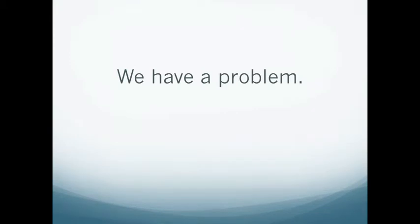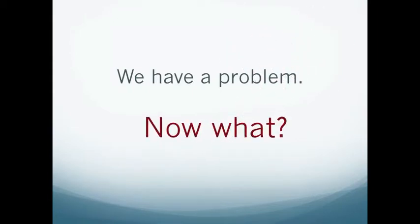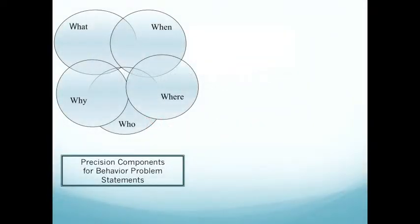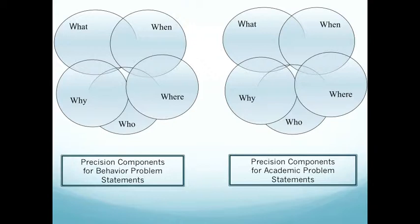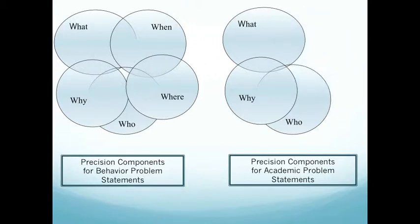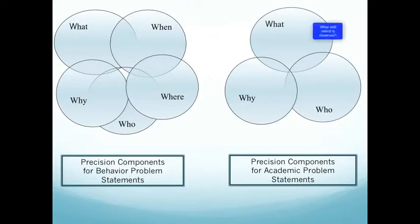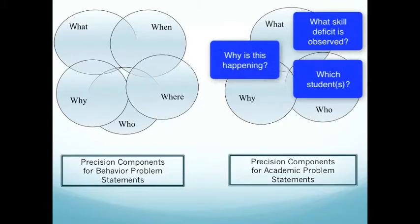Once we have defined that there is a discrepancy between what we expect and what we observe, our next question is: what do we do next? Is this a point where we can already start talking about solutions? With our behavior data, we used five precision elements — what, when, where, who, and why. With our academic data set, we often find that we can collapse these into just what, who, and why.